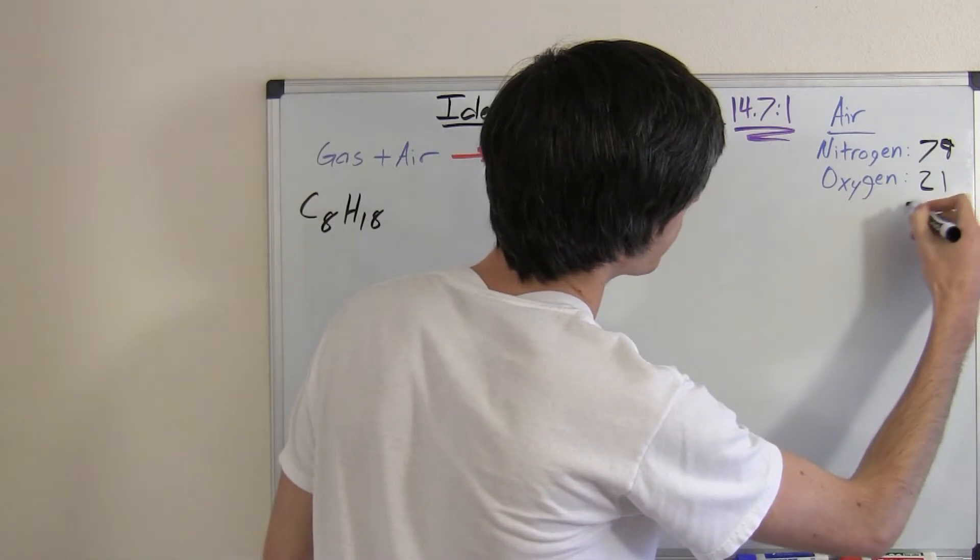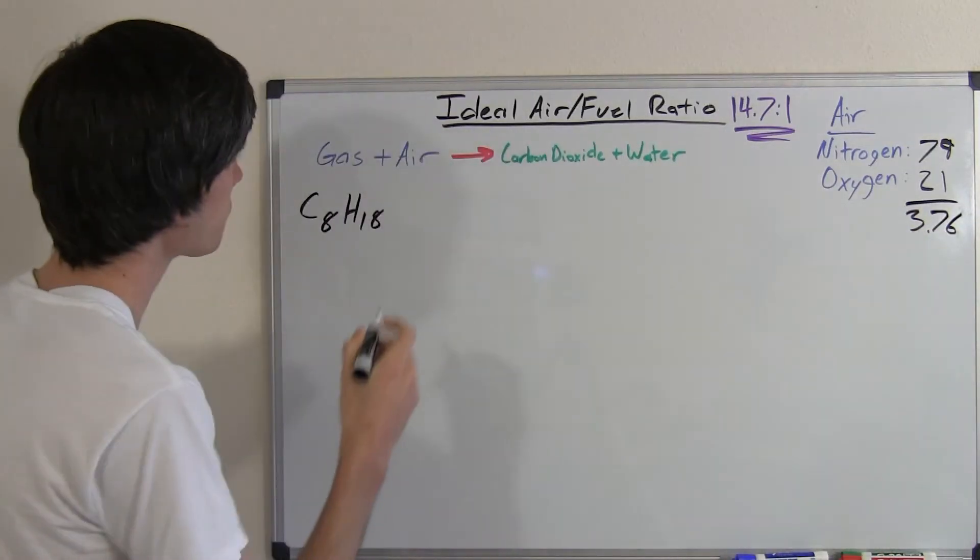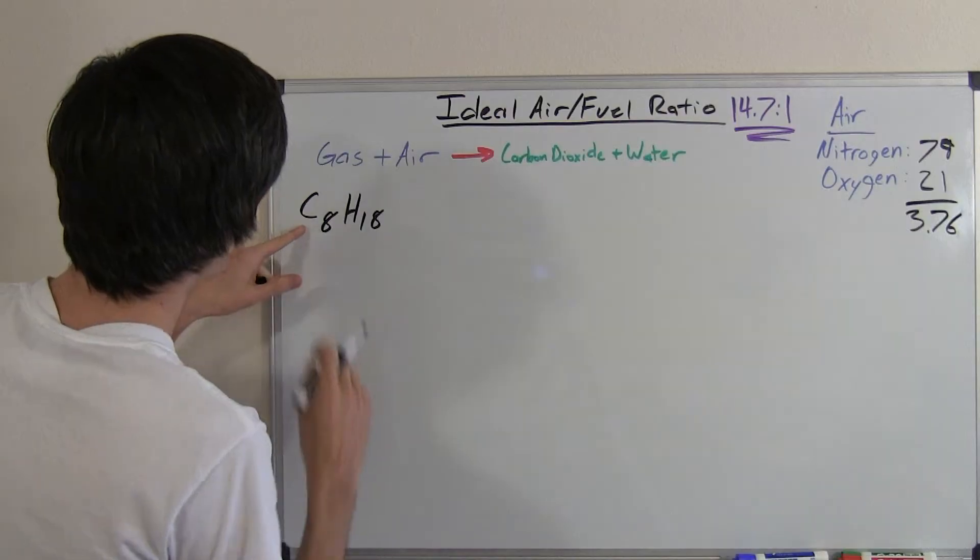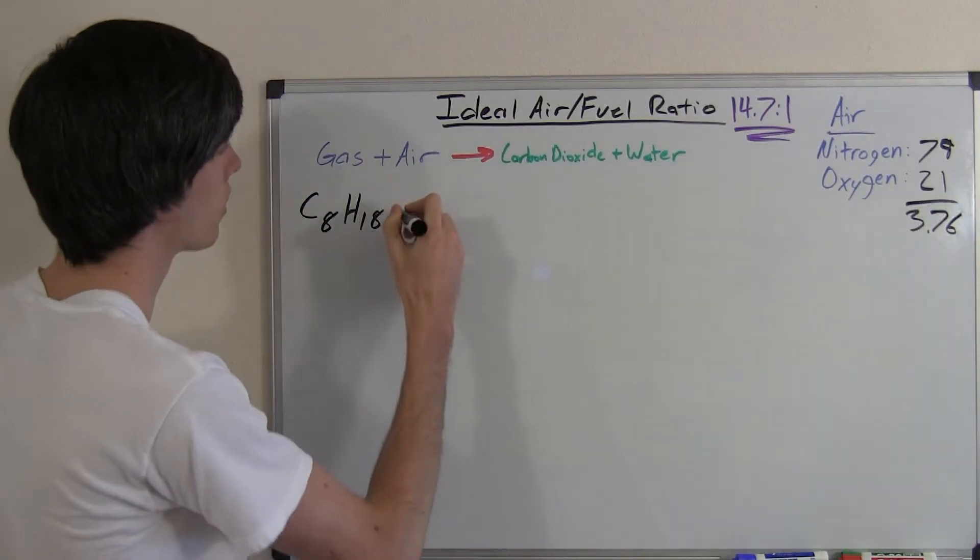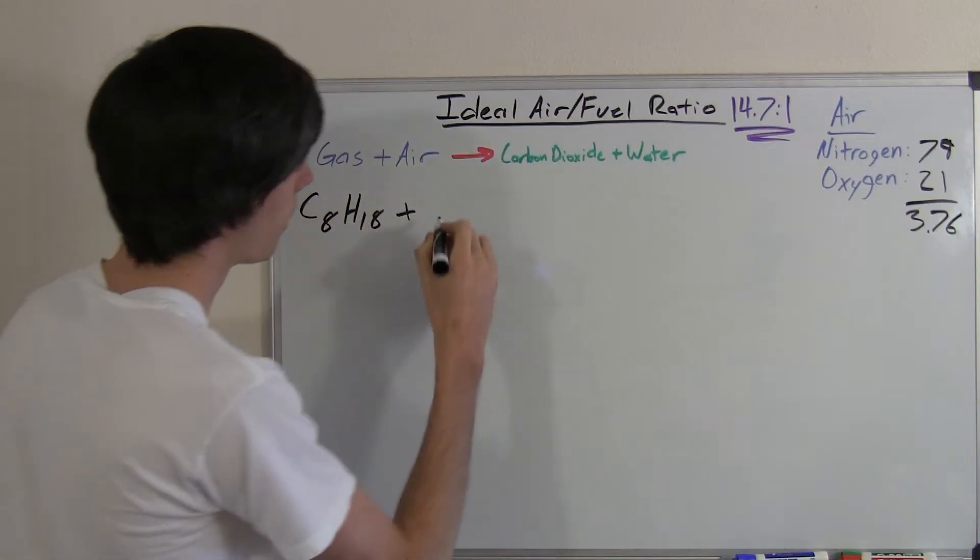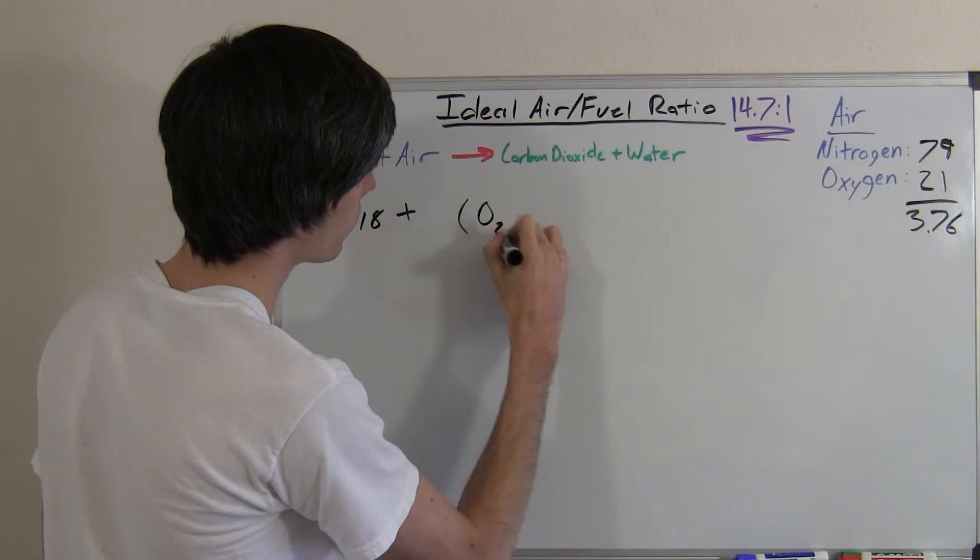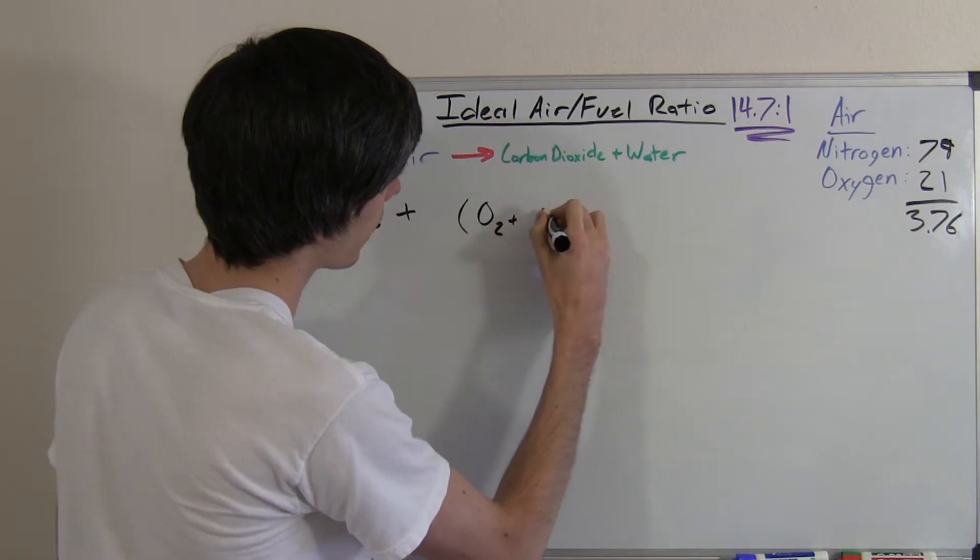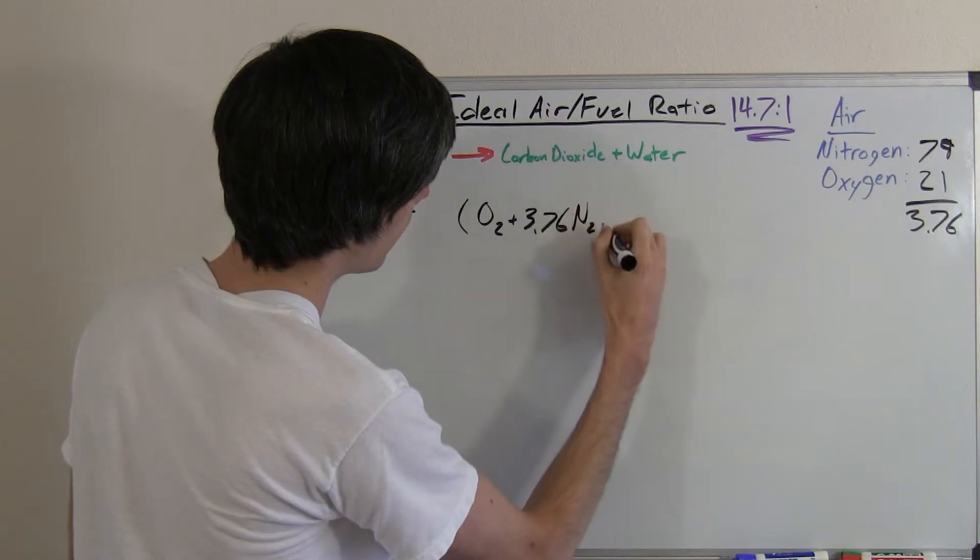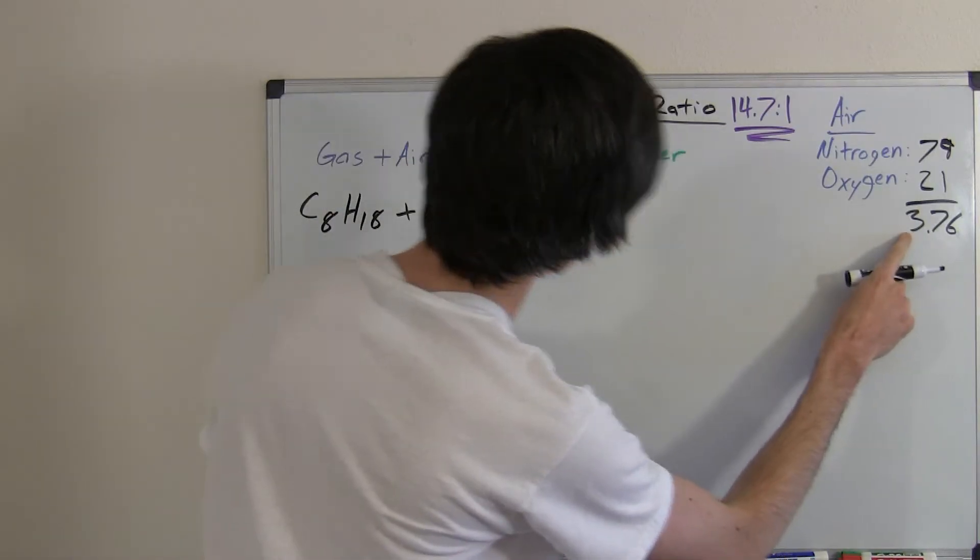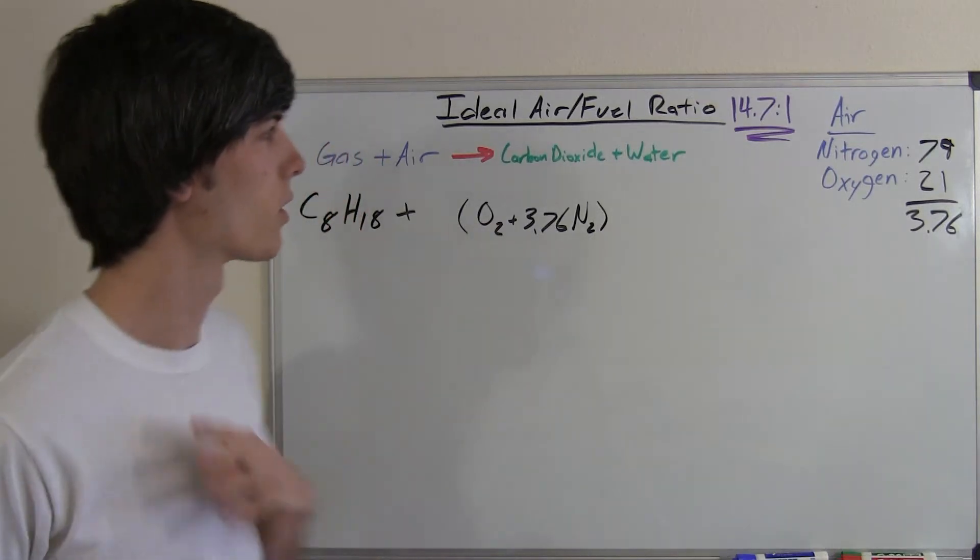So when you divide 79 by 21 you get about 3.76. So for our one unit of octane C8H18 we're going to add to that our units of air. So air is going to be for every one oxygen molecule we have, we're going to have 3.76 molecules of nitrogen. So we don't know what's going to be in front of that. We're going to balance an equation here.